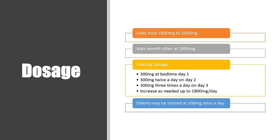What is the dosage? Generally a ceiling dose of 1,800 to 3,600 milligrams, although maximum benefit for most people is probably at 1,800 milligrams — anything beyond that often increases the risk of side effects. It's started on a taper: 300 milligrams at bedtime on day one, twice a day on day two, three times a day on day three, and can be increased up to 1,800 milligrams per day. Elderly patients may start at 100 milligrams per day.